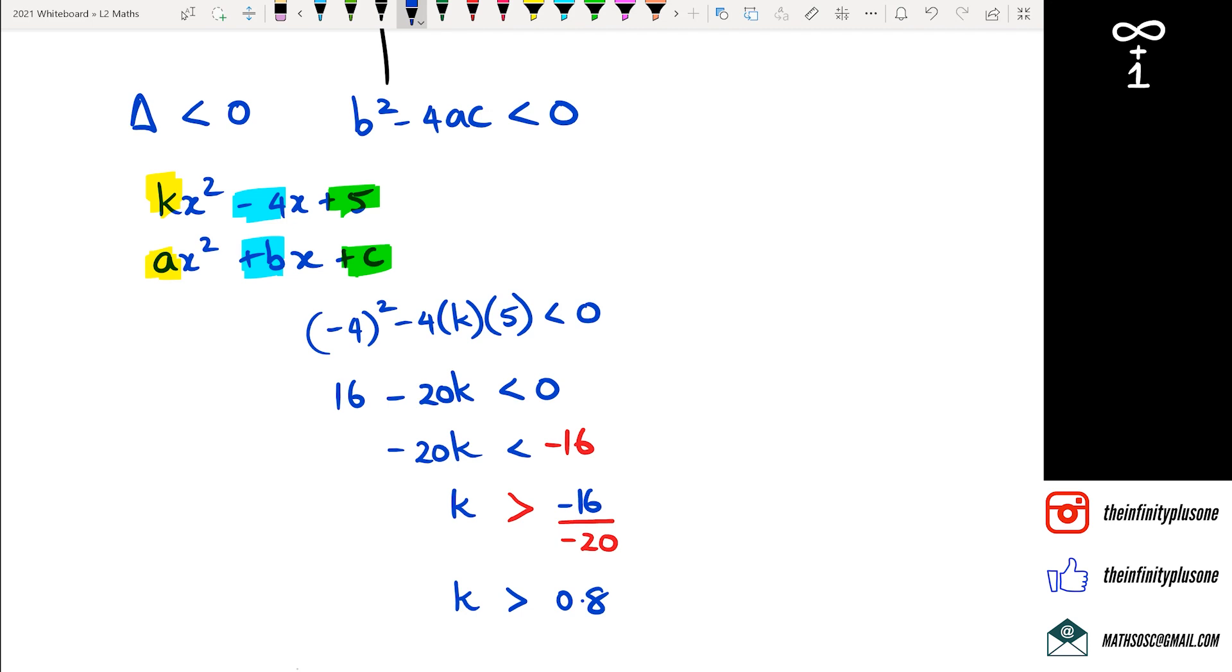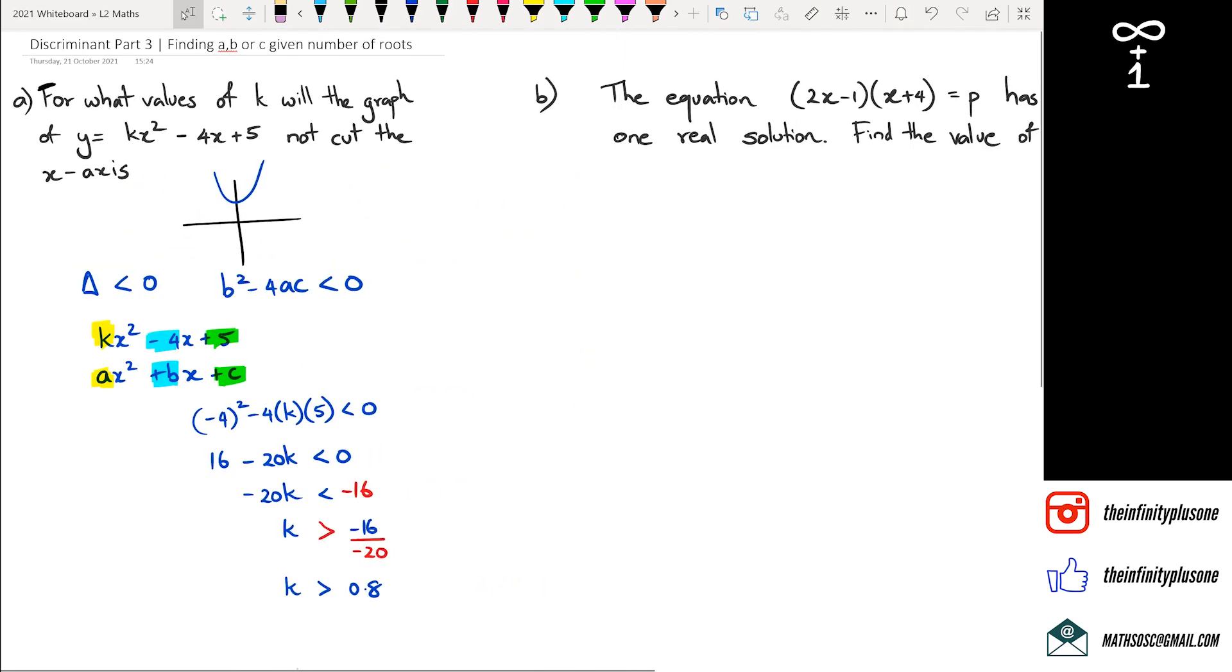So basically, what we're trying to say is, if k is above 0.8, then the equation of kx squared minus 4x plus 5 will not cut the x-axis. Cool. So that is basically question A.